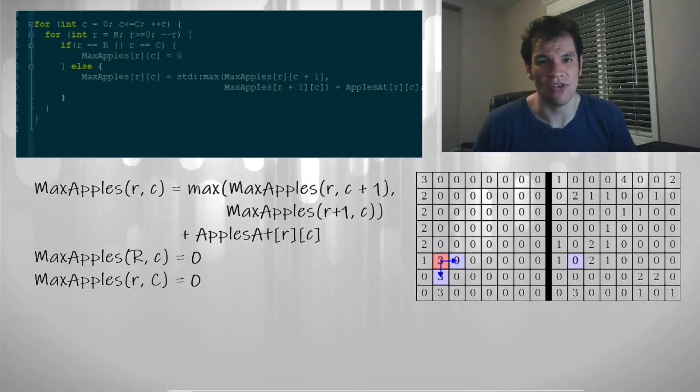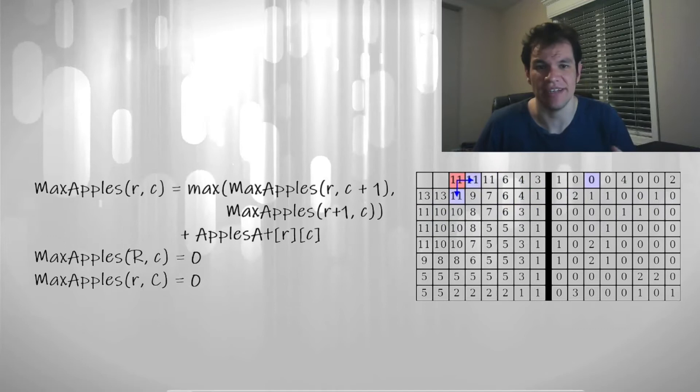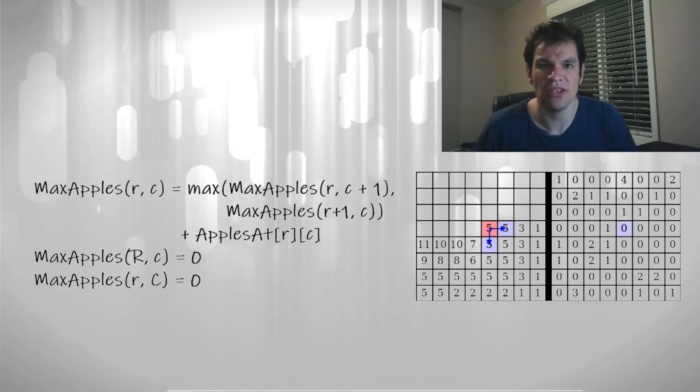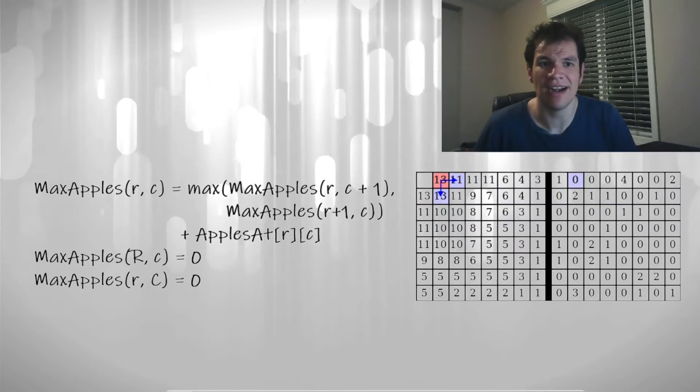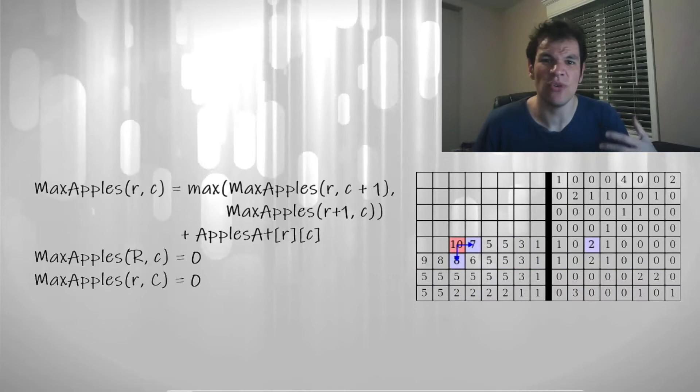Most times for filling the table, you only need to nest few loops either in increasing order or in decreasing order, depending how the recurrence is constructed. Just take care that if in the right side there are indexes greater than on the left, then you need to compute the table position from greater to lesser.